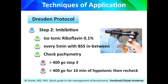Otherwise, we have to instill hypotonic riboflavin for about 10 minutes and recheck the pachymetry. We can repeat this until we reach more than 400 microns. It is recommended to avoid putting the speculum during imbibition of vitamin B2. There is no need to expose the cornea during this period because of dehydration, and this will reduce the loss of corneal thickness and may prevent the need for hypotonic riboflavin.